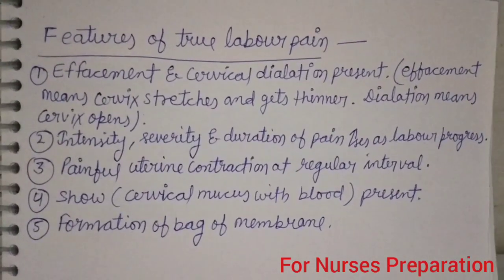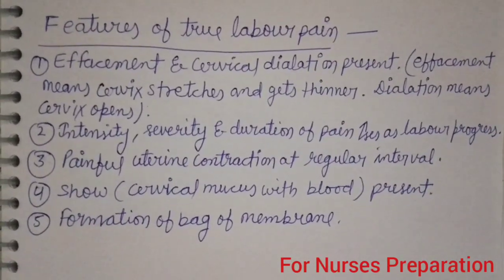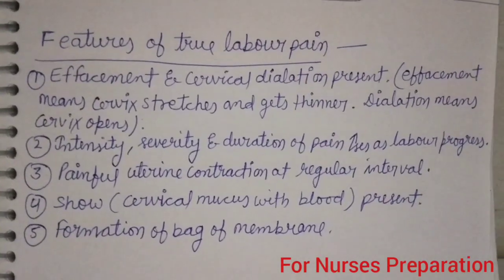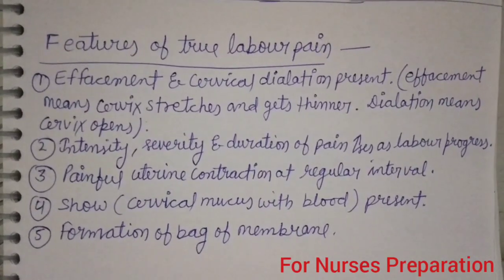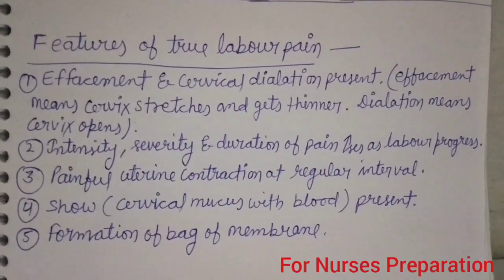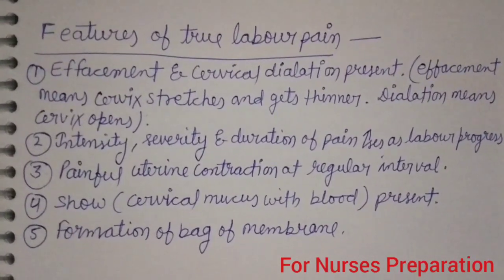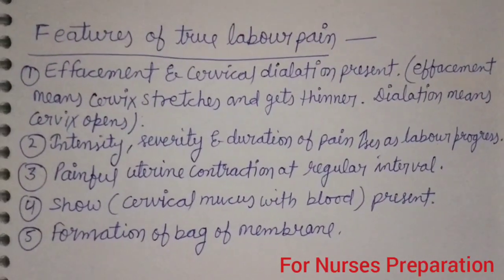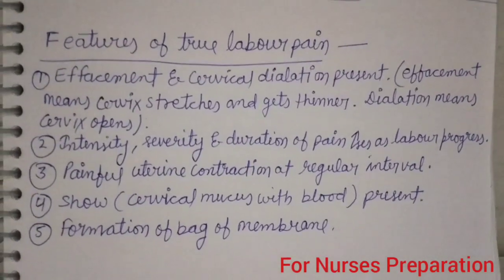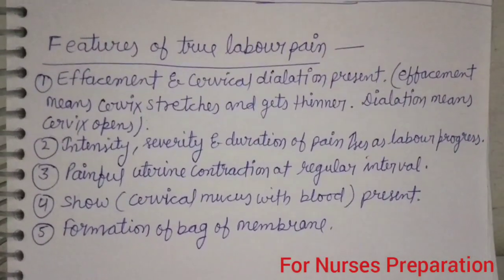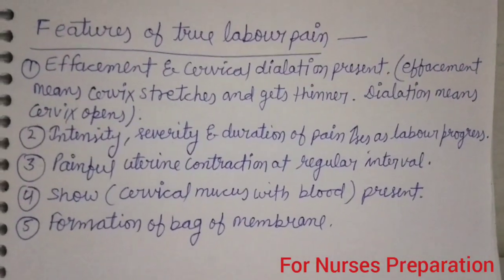Let's have a quick revision. Features of True Labour Pain include: effacement and cervical dilation present; intensity, severity and duration of pain increases as labour progresses; painful uterine contractions at regular interval; show present — show means cervical mucus with blood; and formation of bag of membranes occurs during True Labour Pain.